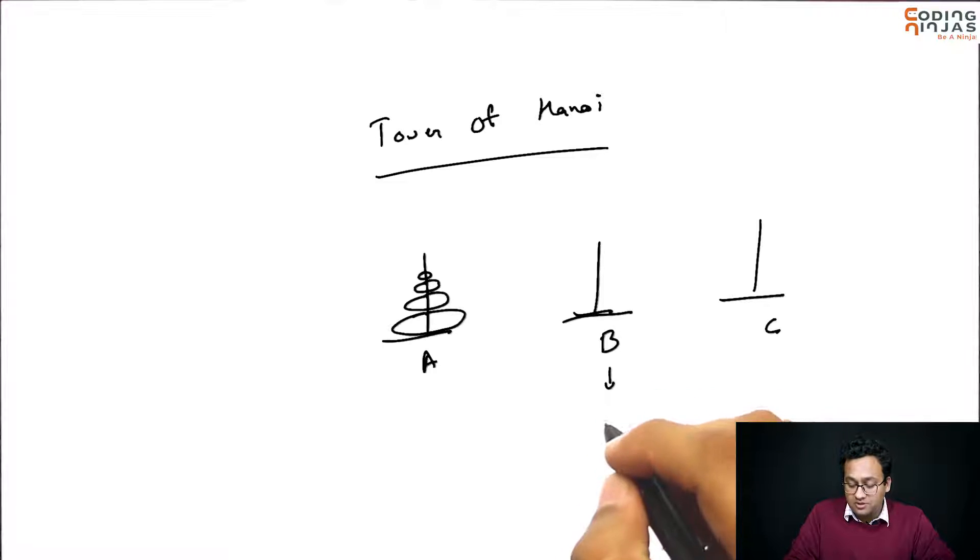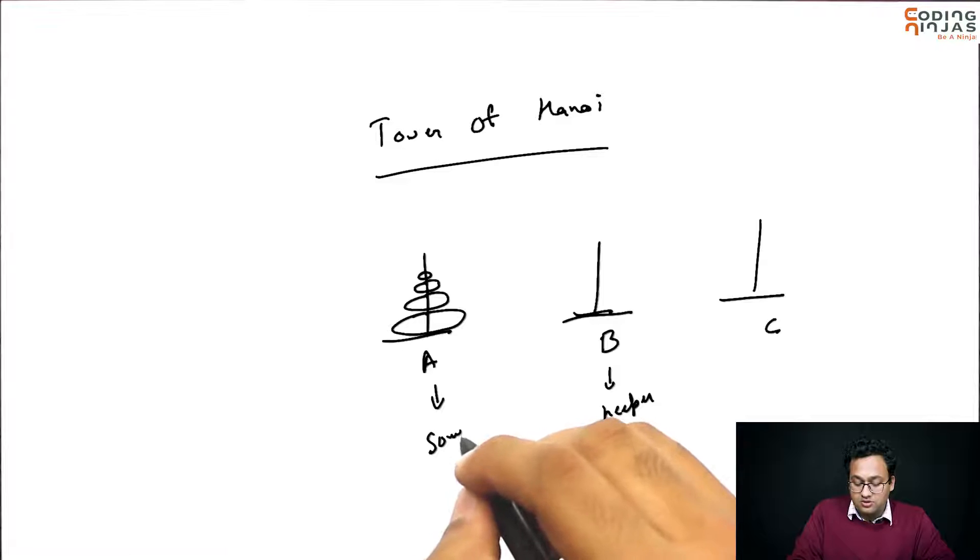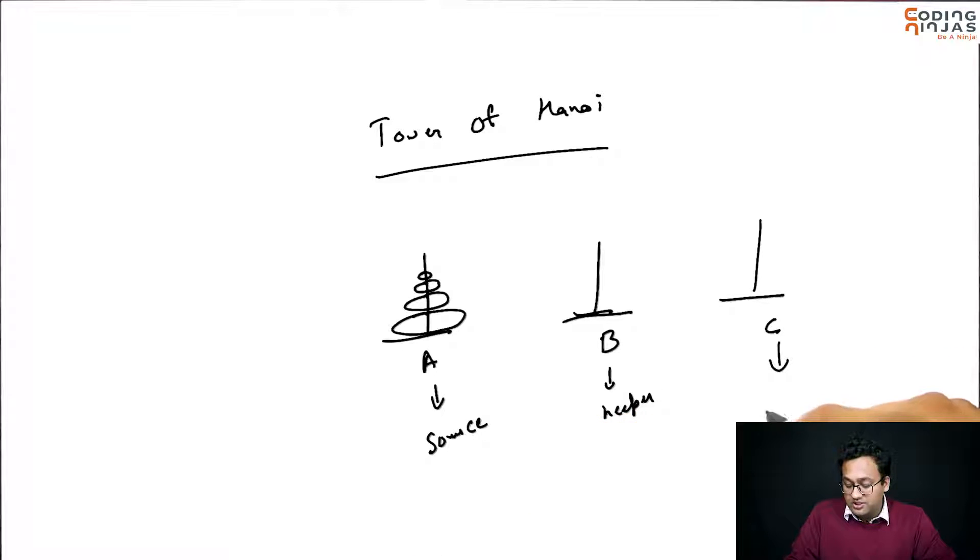So, this is your helper. This is your source. This is your destination. You need to move all of these to destination and you can use B as a helper.